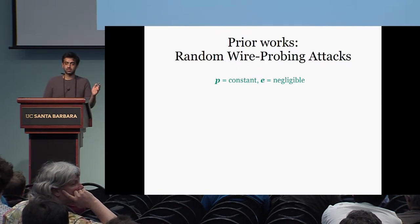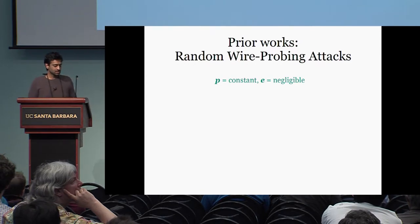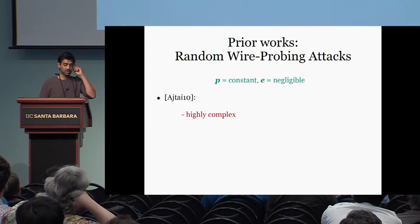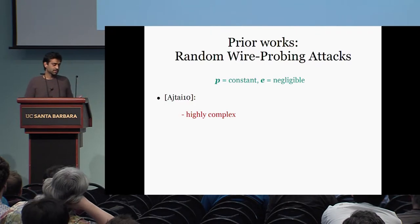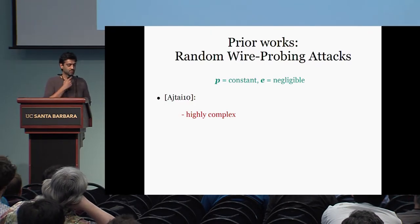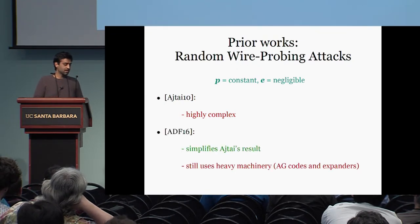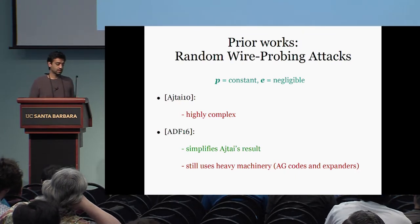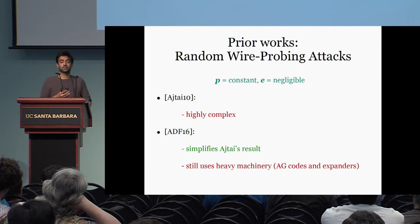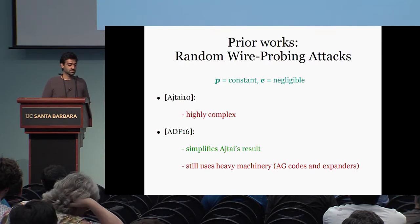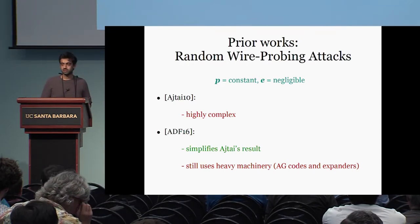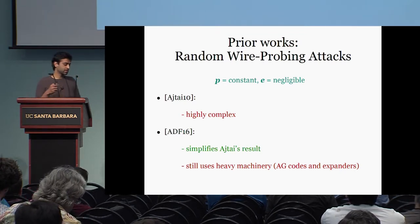There are two prominent works in this regime. The first is by Ajtai, who showed the first construction in this regime; however, the construction is highly complex. Following Ajtai, there was the work of ADF, which among many results showed a simplification of Ajtai's result. But this result still uses some heavy machinery — for instance, they use AG codes, expanders, and so on. Even Ajtai's results use expander-based tools in the construction.